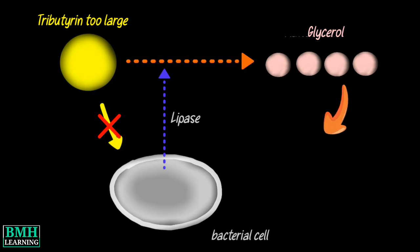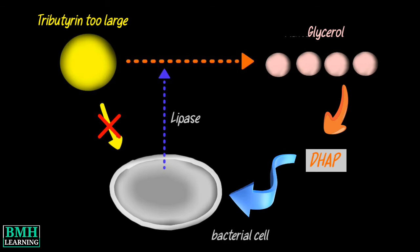After hydrolysis, the glycerol can be converted to dihydroxyacetone phosphate, an intermediate of glycolysis. This intermediate can then be taken into the cell.